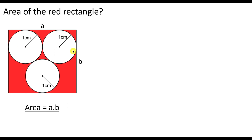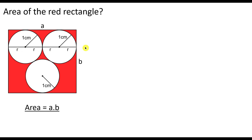You can see from the figure that finding A is relatively easy. Here we have that A is equal to four times the radius of the circle, which is one. You can see here is one radius, two times the radius, three times the radius, and four times the radius. So A equals four times the radius, which is equal to four centimeters.